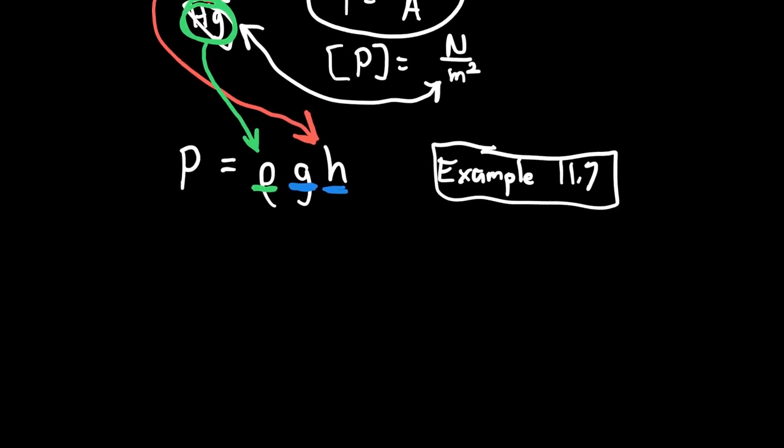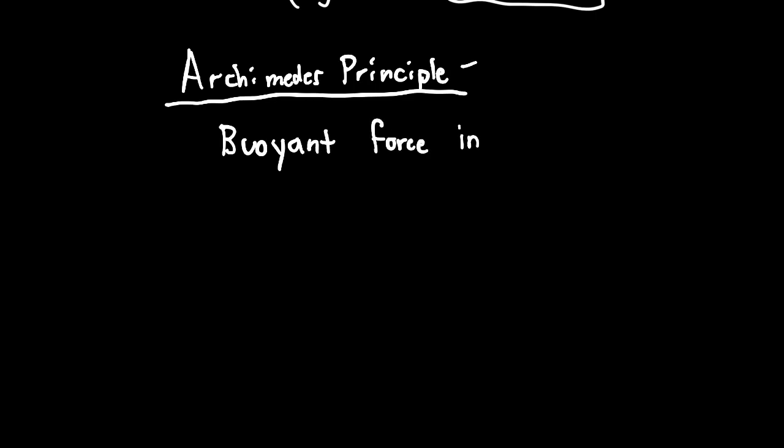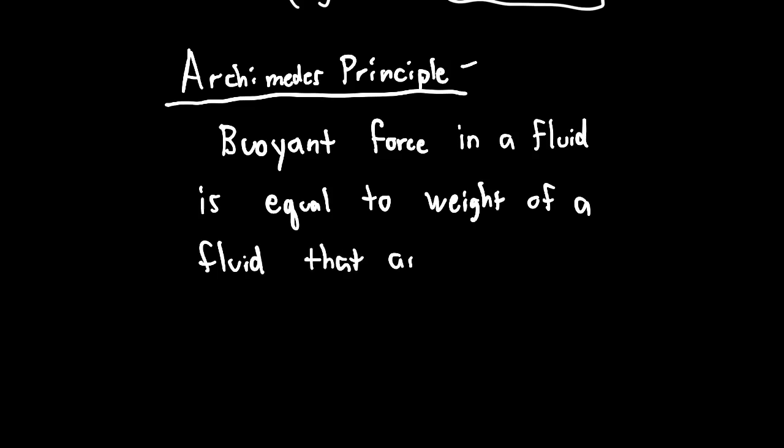The last thing we want to talk about is Archimedes principle. If we think of pressure as a downward force pushing on things, Archimedes principle governs the upward force, something called buoyancy. Archimedes principle tells us that there's a buoyant force in a fluid. The buoyant force is equal to the weight of fluid that an object displaces.